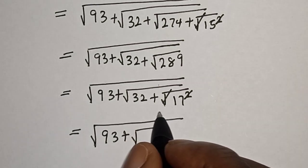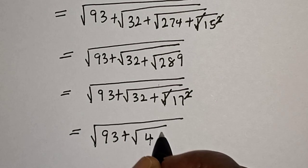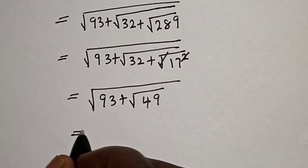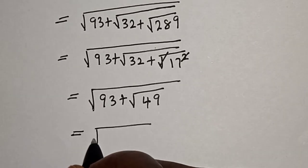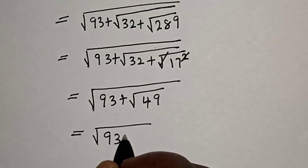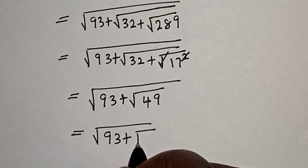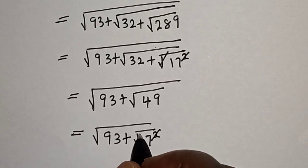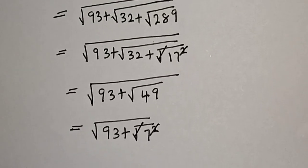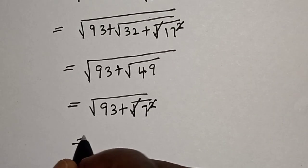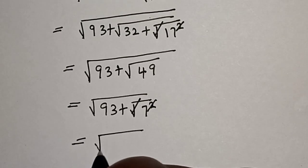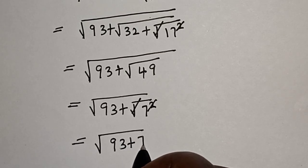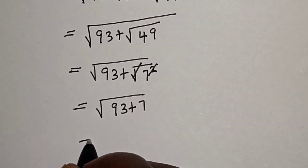That gives us 49. So this is equal to square root of 93 plus square root of 49, which is 7. We square 7, so that cancels, and this is equal to square root of 93 plus 7.